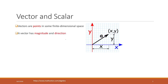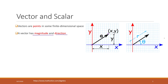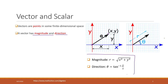For a vector, it has magnitude and also direction. The magnitude is just the distance between the vector and the origin point — normally at (0, 0). The direction is defined as the angle theta. That is how we define magnitude and direction.